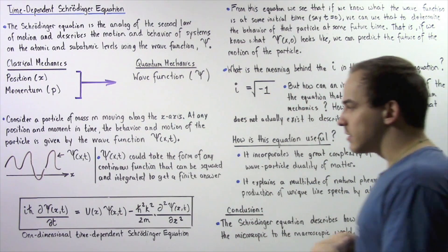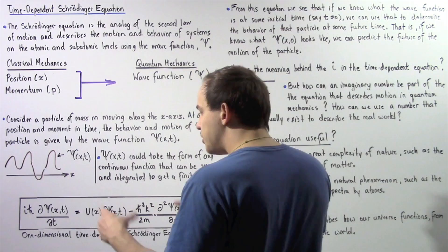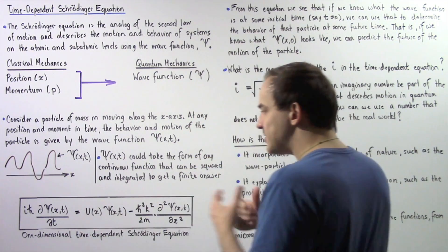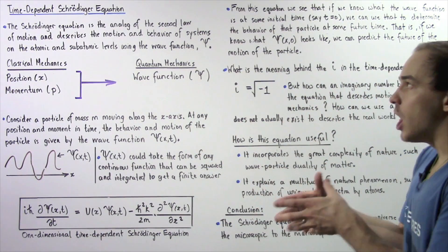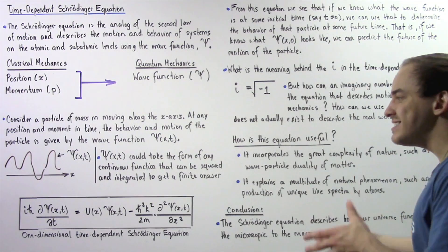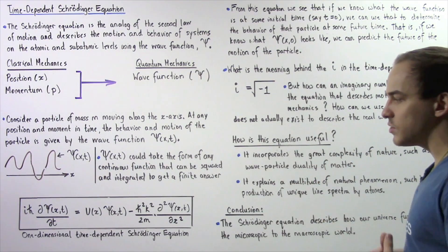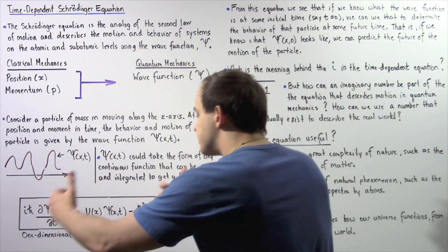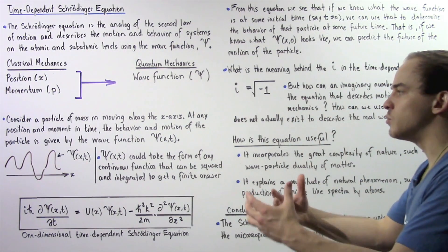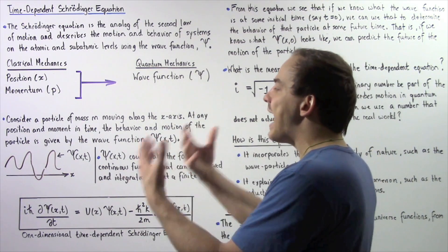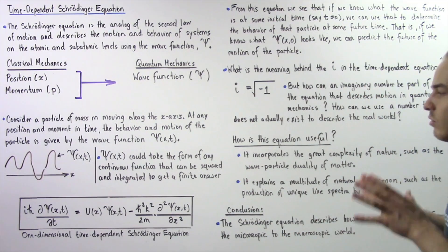we can predict the future of the motion of the particle to the extent that quantum mechanics allows us to. So basically, if we are given this equation and we know what our initial condition is — if we know what the wave function of our system is at some initial time of t equals zero seconds — we can then use this equation to calculate what the wave function will actually look like at some future moment in time.